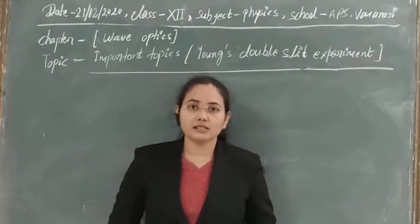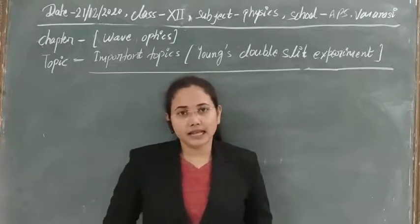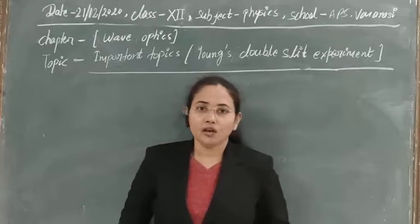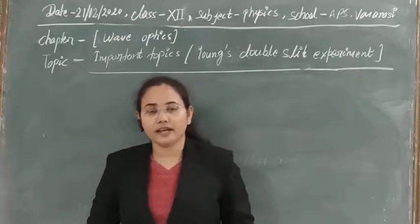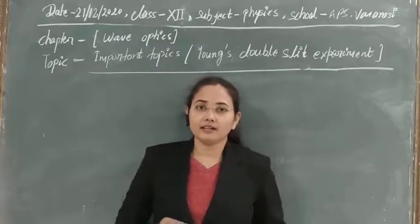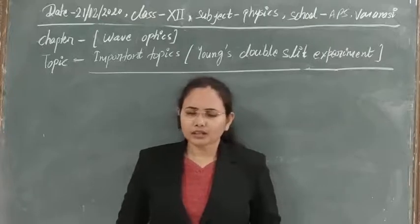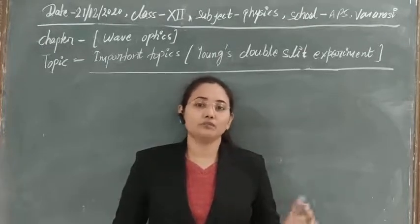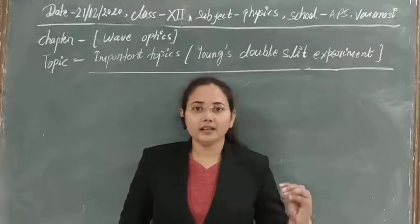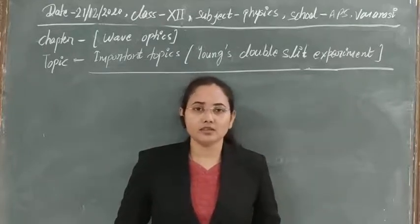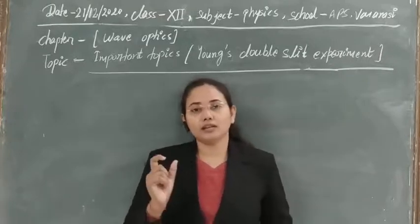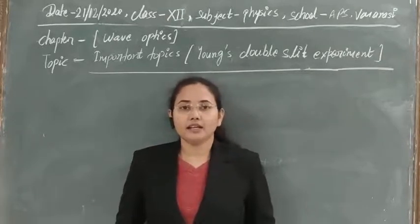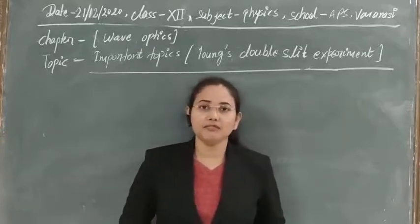Today let's discuss the topic of Young's double slit experiment. As yesterday we discussed interference of light and the conditions necessary for well-defined or sustainable interference, we also saw how intensity is distributed after interference of light from two coherent sources. If sources are coherent, an interfering term appears in the intensity expression, dependent on the phase difference between the two waves. Maximum phase difference gives maximum intensity; minimum phase difference gives minimum intensity.